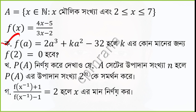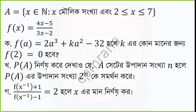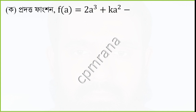What number do we have to do? Tell us about what number we have to do. If we have to do the f function — f of a is equal to a cubed plus k times a squared minus 32. We know we have to find f of 2.